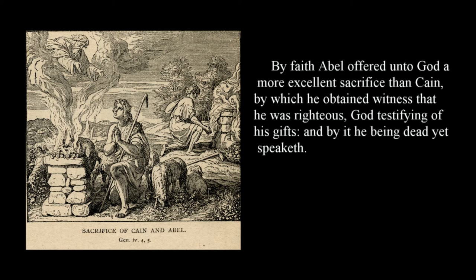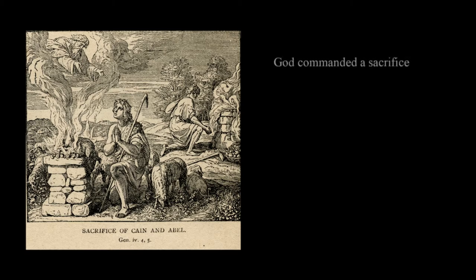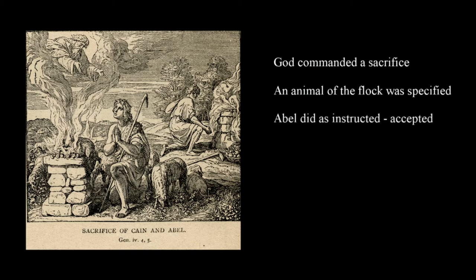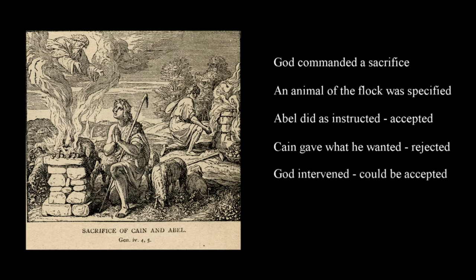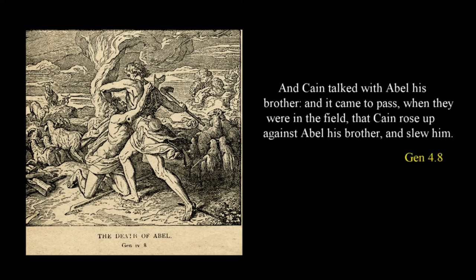This is consistent with the statement about Abel in the New Testament: 'By faith Abel offered unto God a more excellent sacrifice than Cain, by which he obtained witness that he was righteous, God testifying of his gifts, and by it he being dead yet speaketh' in Hebrews 11:4. So the scenario is this: God commanded a sacrifice; the sacrifice was to be an animal, here identified specifically as being of the flock. Abel offered of his flock and is described as being faithful to God. Cain on the other hand offered of his harvest, which wasn't acceptable.